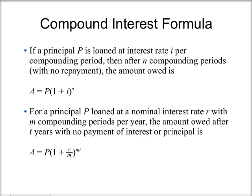Here we have the other version of the formula. In this case, we have the nominal annual interest rate R and M compounding periods per year.